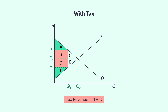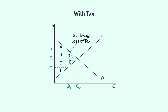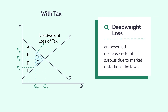Because of the tax, the units between QT and QE are not sold. Comparing the outcome with and without tax, the total surplus falls by the area C plus E. Area C plus E is also known as the deadweight loss (DWL) of the tax. This area is the drop in total surplus when compared to the outcome without tax.